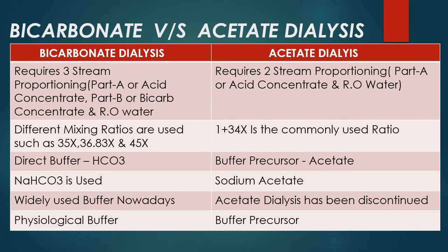Regarding buffer nature: bicarbonate is a direct buffer. Acetate, on the other hand, is a precursor — meaning acetate is first metabolized in the liver to generate bicarbonate ions in an equimolar ratio. In the bicarbonate concentrate, the main component is sodium bicarbonate (NaHCO3), also known as sodium hydrogen carbonate. For acetate dialysis, the concentrate contains sodium acetate or sodium diacetate.